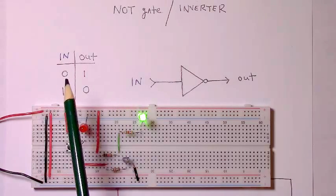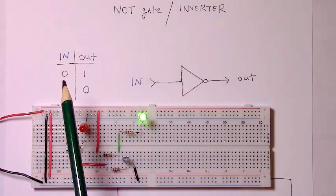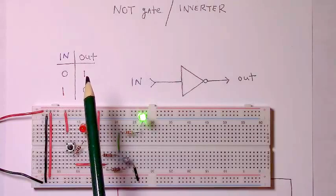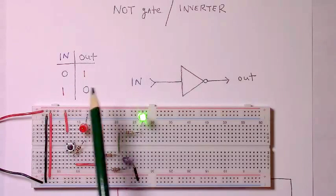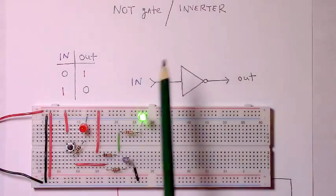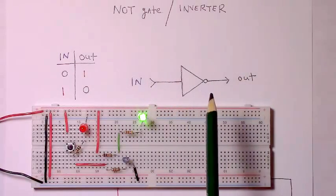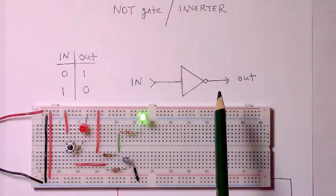Whenever the input is 0 or low, the output is a 1. And whenever the input is a 1 or high, the output is low. So there's the generic sideways triangle with a little circle on the end that symbolizes a NOT gate in some schematics.